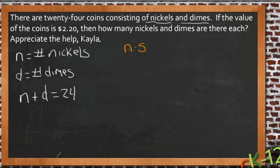So if we say n times 5 plus d times 10, then we know the total number of pennies that we have, or the value of pennies that we have, and we can say that that is equal to 220. $2.20 is the same as 220 pennies.